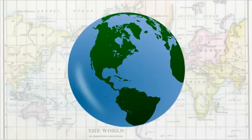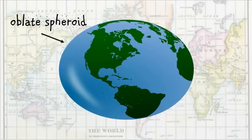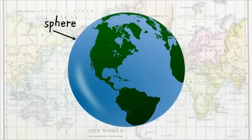So here we have the Earth, which is a sphere. Actually, it's not a sphere, but an oblate spheroid. But to make things easier, we generalize it as a sphere.